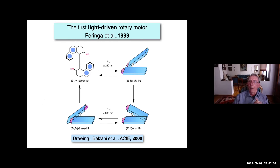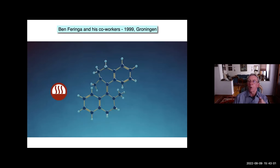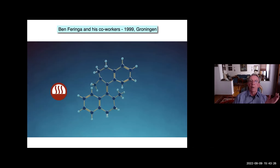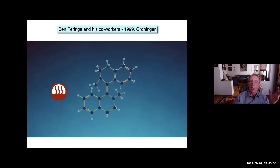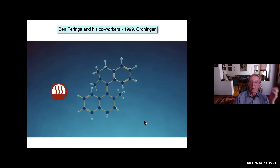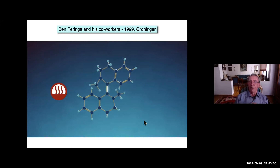Ben Feringa and his group published a beautiful video which is probably easier to understand. We have the sterically hindered double bond — four steps: shine light, heat, shine light, heat. So: we heat, we shine light, we heat, we shine light. You have a big flash when you shine light, and a heating symbol for the thermal steps. I strongly hope you can visualize it.